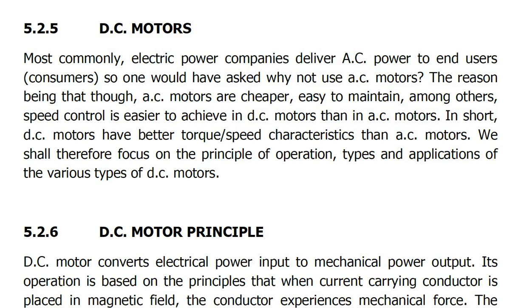However, the other side is that AC motors have a problem with speed control — the speed is almost constant. But when you take DC motors, you are able to vary the speed quite easily. In short, DC motors have better torque-speed characteristics than AC motors. That is why we are focusing on DC motors.